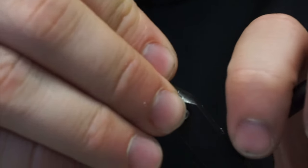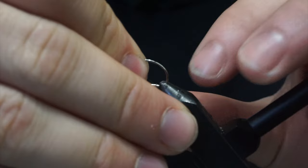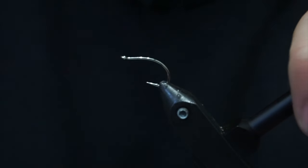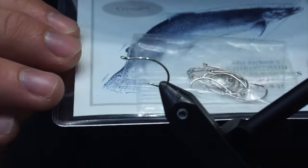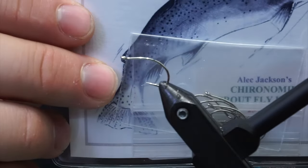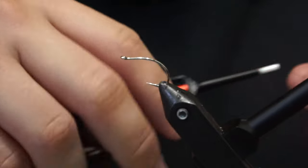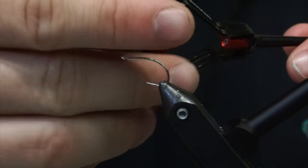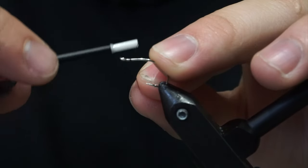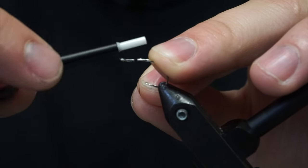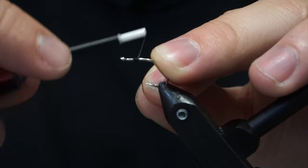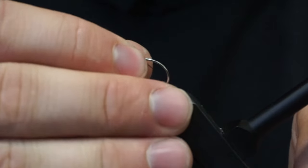And so these hooks I'm using are ones I actually like a lot. They're made, they're a small break off of Daiichi, they're these Alec Jackson hooks. These are their Chironomid hooks, this is a size 9. They're like little kind of, I don't know if they're small batch hooks or what but they're like a little smaller branch off of Daiichi and I think they make really good hooks. So I'm a fan of their Chironomid hooks, I like the shape of them.